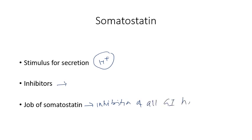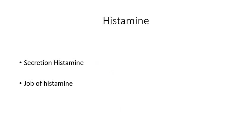The key inhibitor of somatostatin release is vagal stimulation — vagal stimulation inhibits somatostatin. Now let's come to the second paracrine hormone, histamine. The secretion of histamine is actually from the mast cells in the GI mucosa.